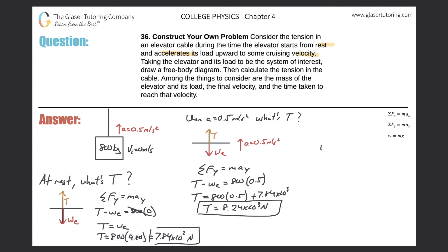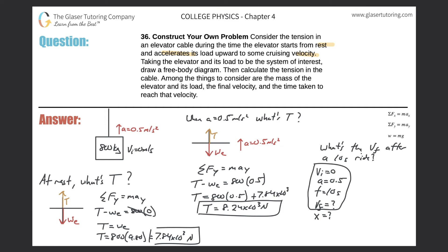Let's say: what's the final velocity after a 10-second ride? We know the elevator starts from rest, the acceleration is 0.5 m/s², and the time is 10 seconds. Using the kinematic formula: final velocity equals initial velocity plus acceleration times time. So v = 0 + 0.5 times 10, giving a final velocity of 5.0 meters per second.